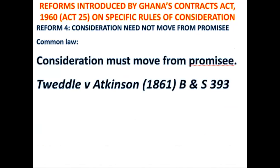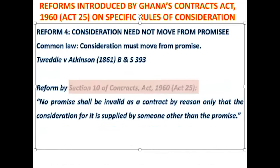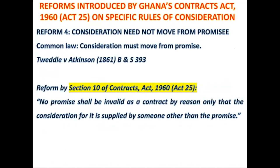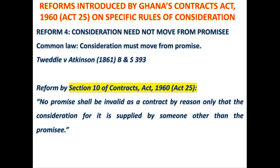This rule has been modified by Section 10 of Ghana's Contracts Act of 1960 Act 25. And what does it say? It says that no promise shall be invalid as a contract by reason only that the consideration for it is supplied by some person other than the promisee. That means if two people agree to confer a benefit on me, even though I the promisee am not the one who provided the consideration, I can still sue to enforce that promise.